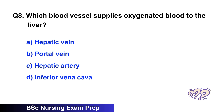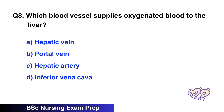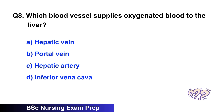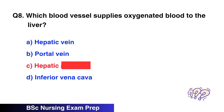Question 8. Which blood vessel supplies oxygenated blood to the liver? The correct option is C, hepatic artery.